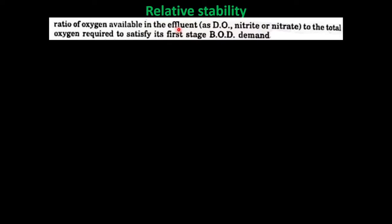Relative stability: the relative stability of a treated sewage effluent is defined as the ratio of oxygen available in the effluent — as dissolved oxygen (DO), nitrite, or nitrate — to the total oxygen required to satisfy its first-stage BOD.